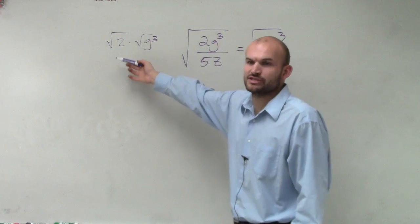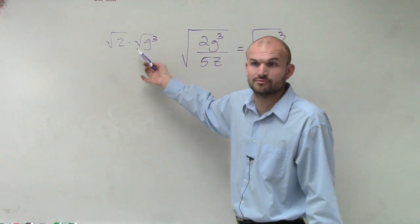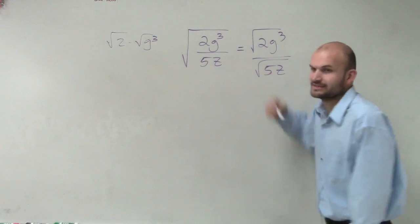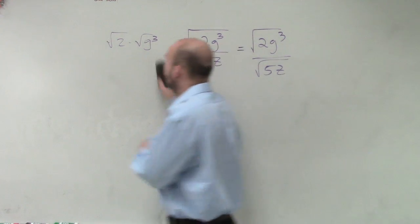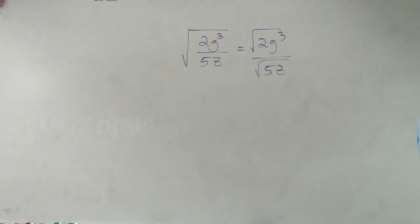All right. Now, we can take the square root of g cubed. We could simplify the square root of g to the cubed, right? But then we're going to have that on the top and bottom. So before we get to that,